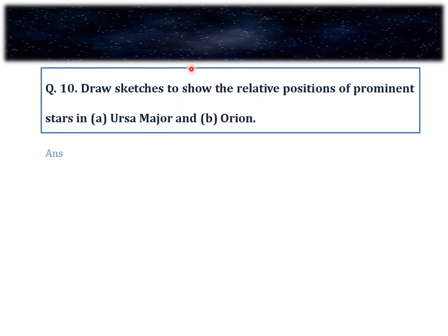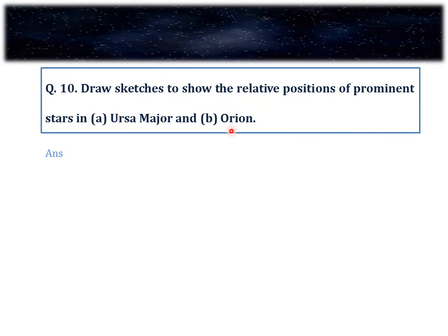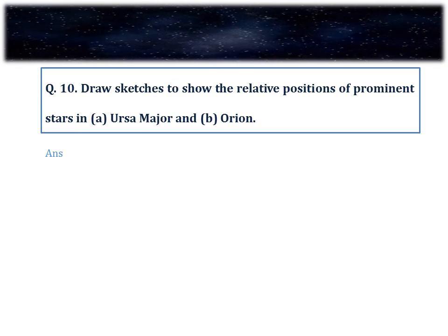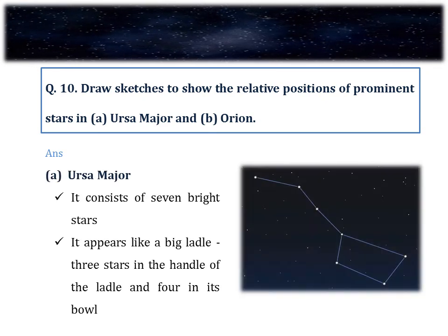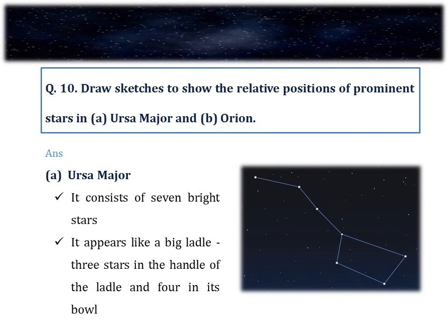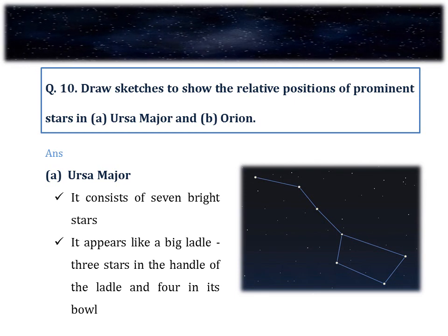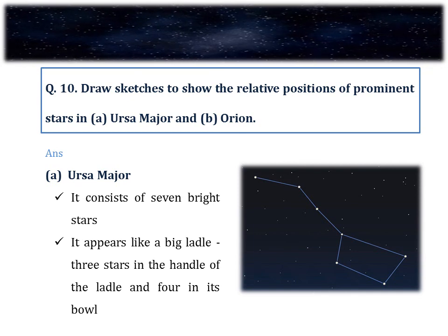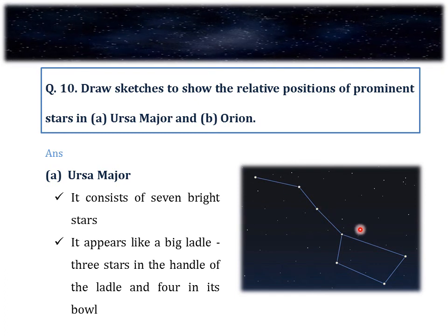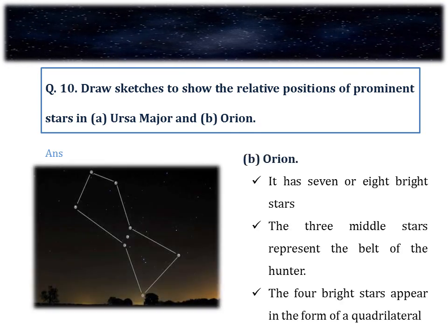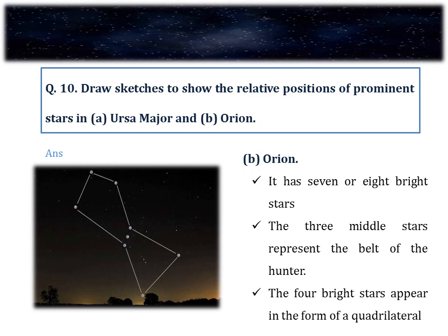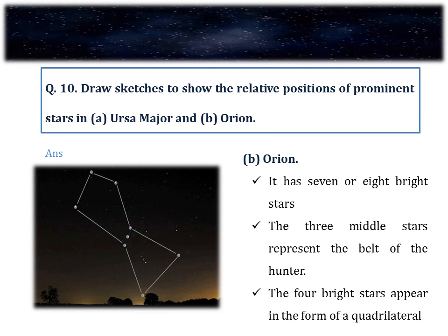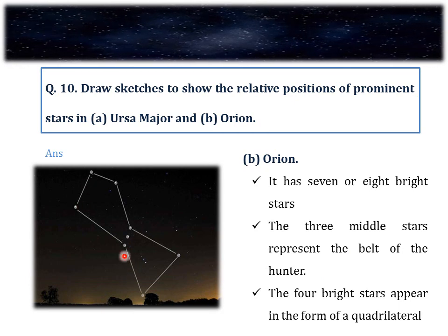Question number 10. Draw sketches to show the relative positions of prominent stars in A. Ursa Major and B. Orion. Ursa Major is one of the most common and famous constellations visible during summer in the early part of the night. Also known as Big Dipper or Great Bear, it has seven prominent stars — three in its handle and four in its bowl. Orion is a magnificent constellation visible during winter in the late evening. It has about seven to eight bright stars and is also called the Hunter. Three middle stars represent the belt of the Hunter and four or five bright stars form a quadrilateral.